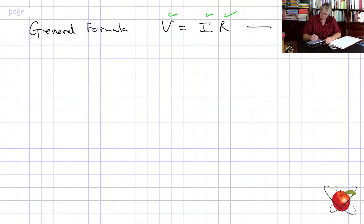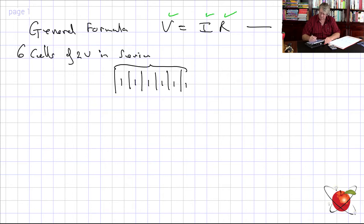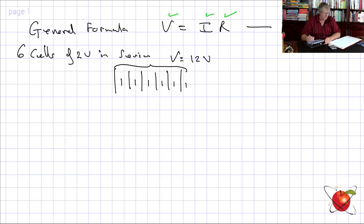Now let's have a look at a circuit. For example, they tell us there are 6 cells of 2 volts in series. So the EMF or terminal voltage is going to be 6 times 2, which is 12 volts. That is going to be V source.